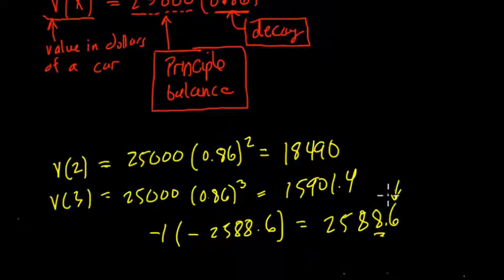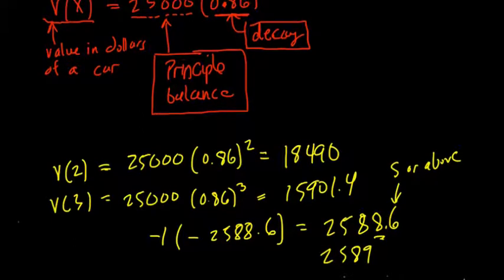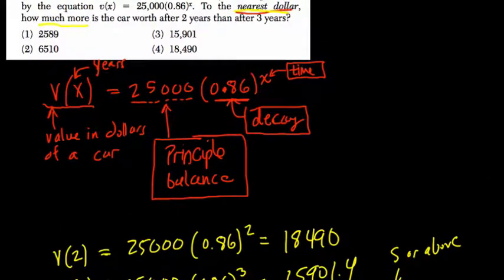round to the nearest whole number. Since this is a 6, if it's 5 or above, you round up. So this is 2,589, and that is choice 1.